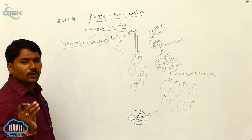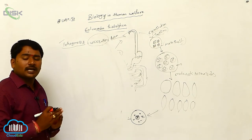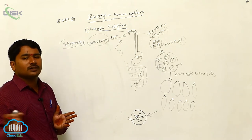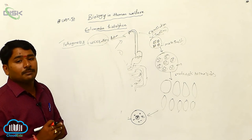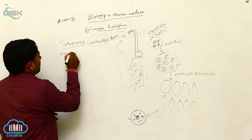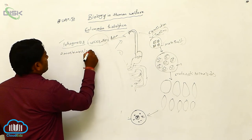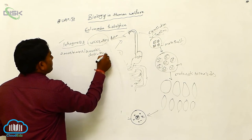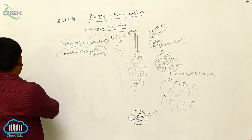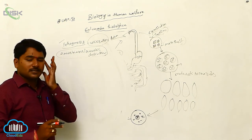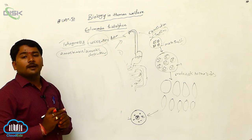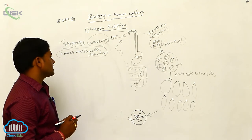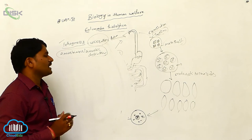Primary amoebiosis takes place only in the intestine. The damaged tissue, blood, and mucus come out along with fecal matter. This is called amoebiosis or amoebic dysentery — stool with blood and mucus is the hallmark. This is primary amoebiosis.